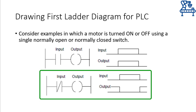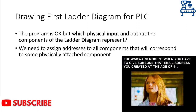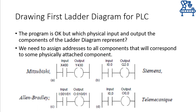If you want to implement a ladder program on a PLC, you need to assign addresses to all components so they represent corresponding real inputs and outputs. The addressing format depends on the PLC manufacturer. Examples shown here include Mitsubishi, Siemens, Allen Bradley, and Telemecanique. Note that all PLCs will use the same ladder diagram logic but different addressing formats to implement it.